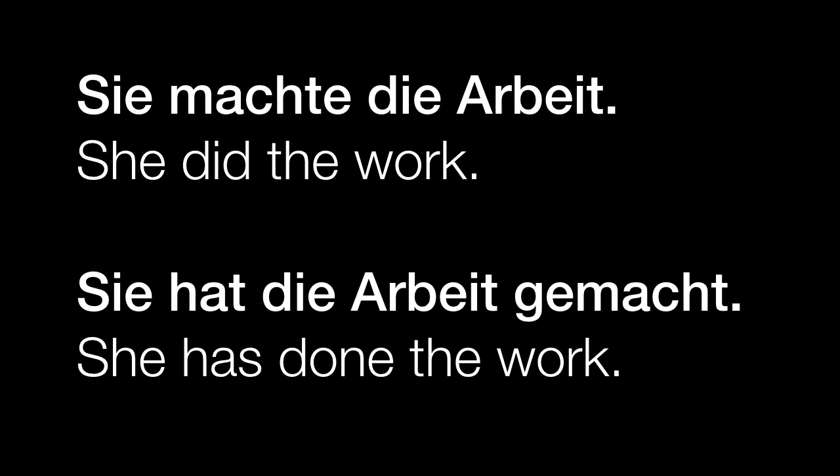Sie machte die Arbeit. Sie hat die Arbeit gemacht. Again, we're treating all of these as meaning the same thing. They're interchangeable in terms of meaning — it's not a different meaning, it's just a different verb form. She did the work — machte. Sie hat die Arbeit gemacht — she has done. Notice the TE on the end; for a she form you don't normally have an E there, but we will here. In the perfect form, the verb is at the end with a GE prefix and a T. Up front, some form of the verb haben.